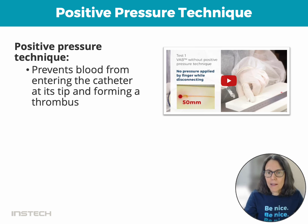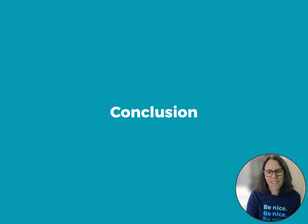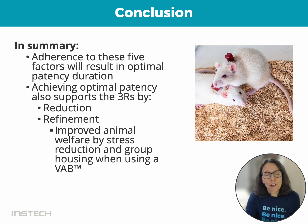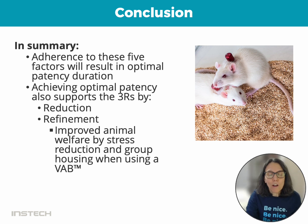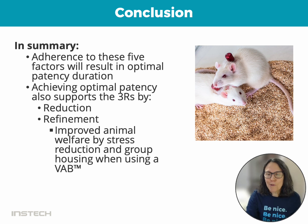If you want more information on this, please go to our website and look at the video on the blog talking about positive pressure technique and how it affects patency duration. In conclusion, optimal patency duration can only be achieved if you adhere to these five factors. At the same time, you will support the 3Rs by reduction of animals needed for vascular access studies and by refinement — improving animal welfare through stress reduction and group housing when you use the VAB.